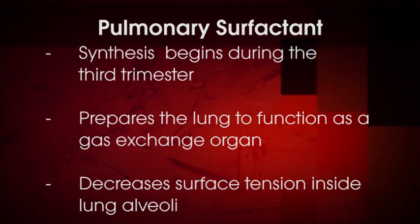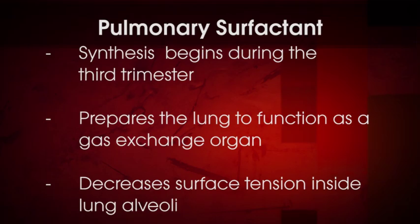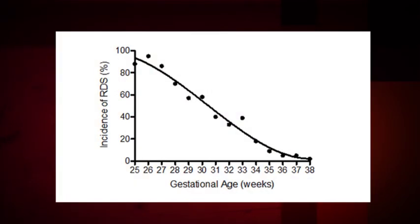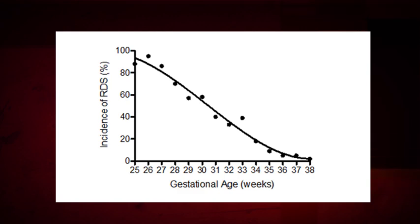Pulmonary surfactant functions to decrease surface tension inside lung alveoli, which prevents the collapse of alveoli upon exhalation. Infants that are born prematurely are at risk of developing respiratory distress syndrome, or RDS, due to a deficiency of pulmonary surfactant. It is well known that the incidence of RDS decreases with increasing gestational age at delivery, such that the risk of RDS is very high in preterm infants and low in those born at term.